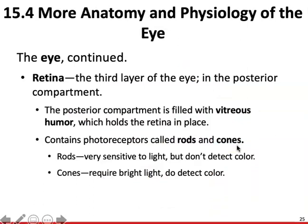Now we're going to move into the third layer — the innermost layer of the eye — the retina. This is what contains photoreceptors that respond to light by generating electrical signals, which are sent to the brain via the optic nerve. There are two different types of photoreceptors: rods, which are used for vision in dim light and black-and-white vision, giving sharpness and contrast; and cones, which are responsible for color vision.